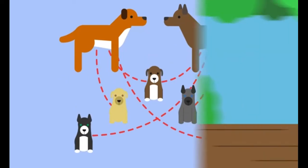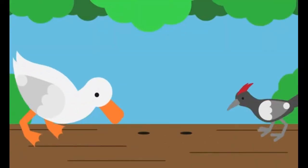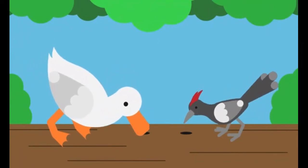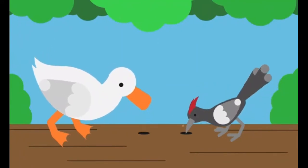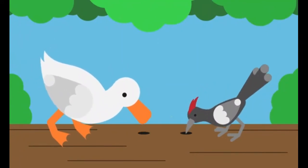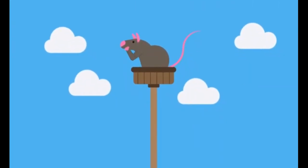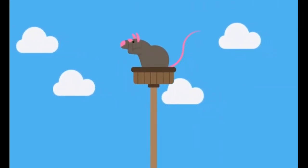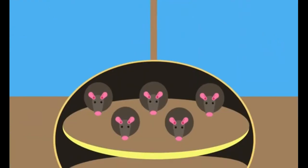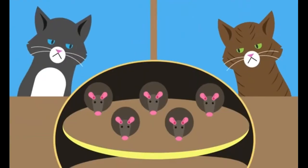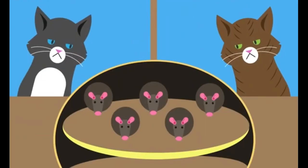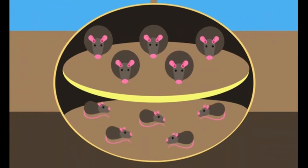This means that some individuals are better adapted to their environment than others, allowing natural selection to take place. For example, in a population of rats, some will have better eyesight than others. These will be able to avoid being eaten by predators, so are more likely to survive, reproduce, and pass on this advantage to their offspring.